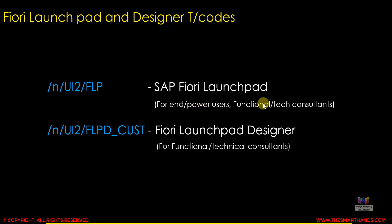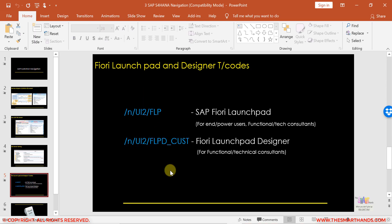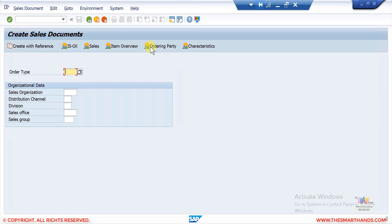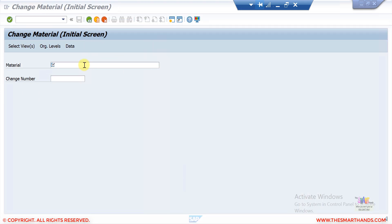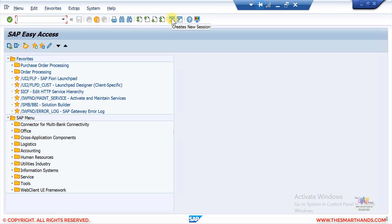Apart from that, the transaction code to open the Fiori Launchpad is /n/UI2/FLP. This is used by end users, power users, and functional and technical consultants. There is also the Fiori Launchpad Designer with transaction code /n/UI2/FLPD_CUST — this is for functional and technical consultants who design or change the design of standard Fiori apps. You can open up to six screens simultaneously for different tasks.